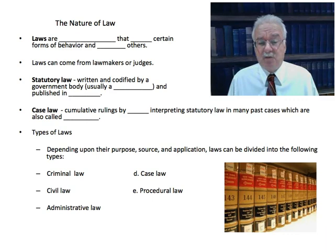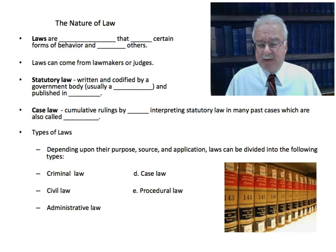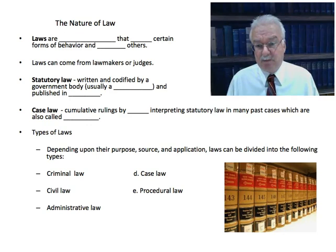Laws can come from lawmakers or from judges. Statutory law is written and codified by a government body — usually a legislature, which at the federal level is Congress, at the state level is the state legislature, and at a local level could be a town council. These statutory laws are published in law books so everybody can know about them. By codified, I mean they're organized by subject matter — they have numbers, sections, and so on. That's statutory law.